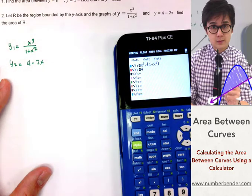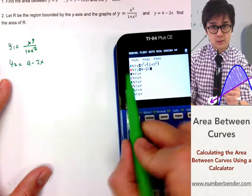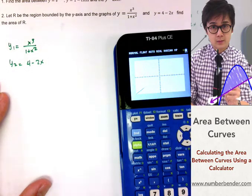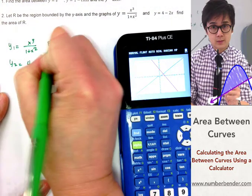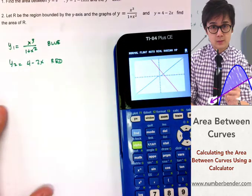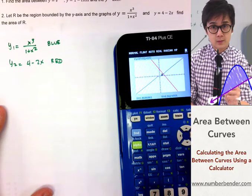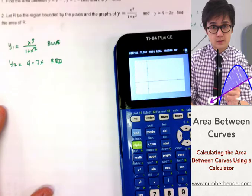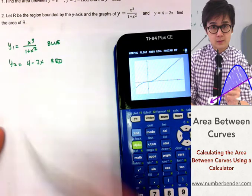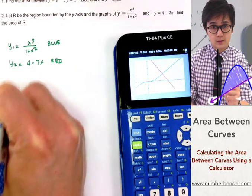The blue graph is the first graph. The red graph will be the second graph. So if we graph it, that will be our first function, and the second function is going downwards. So the first function is our blue graph, and this is our red graph. So let's zoom it in. Trace and then zoom 2, so we can see how the function looks like.